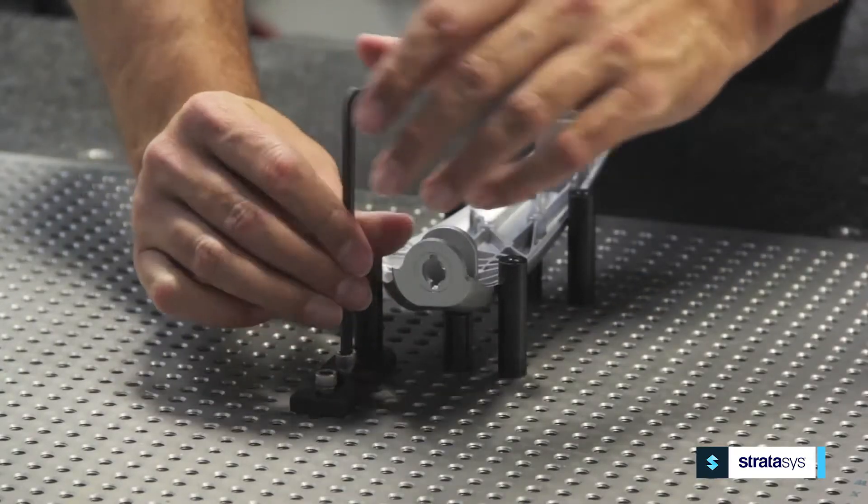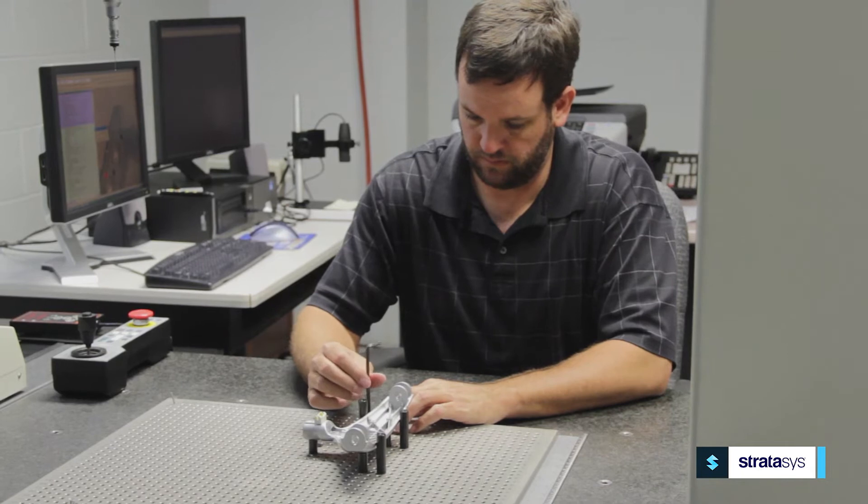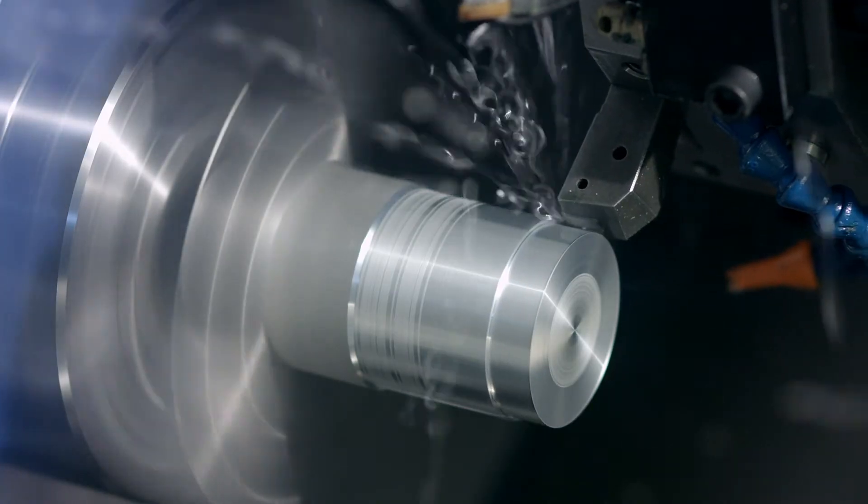Some of the biggest pain points when it comes to assembling inspection fixtures traditionally is the tolerances that can stack up when doing assemblies. In addition, it can be very expensive to machine all the parts required to make the jigs.